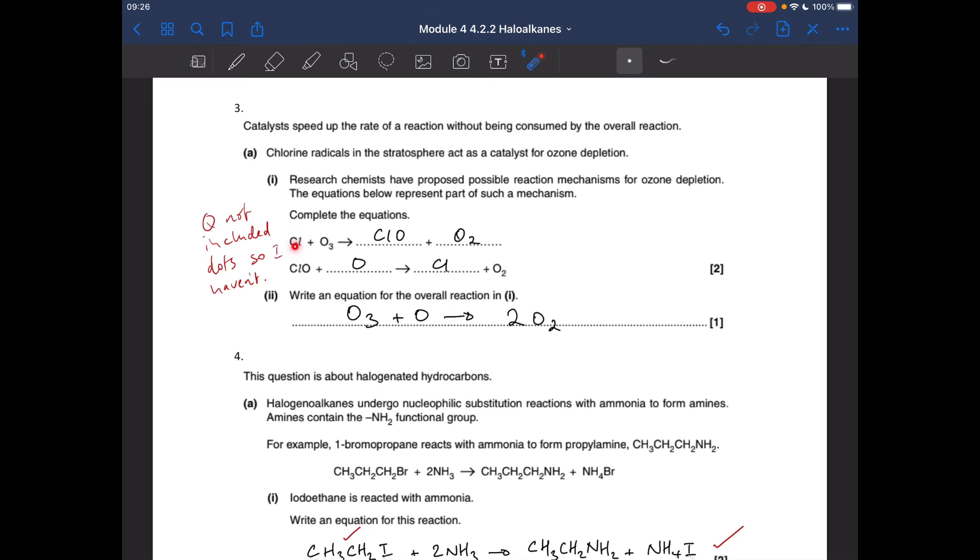So basically, what's going to happen is the chlorine radical will react with the ozone molecule and it will create the oxygen and this will become a ClO radical. The ClO radical will then react with an oxygen atom and regenerate the chlorine radical and an oxygen molecule. So it's kind of backing up the evidence there that it's a catalyst. The chlorine radicals are used but then reformed.